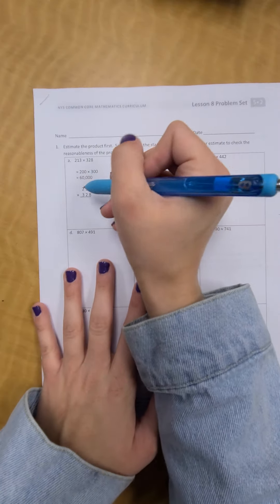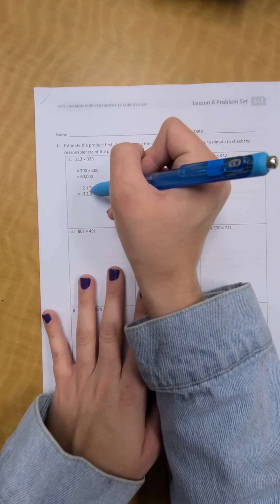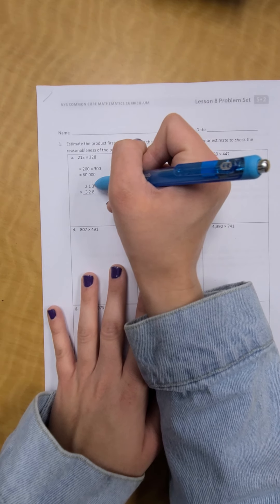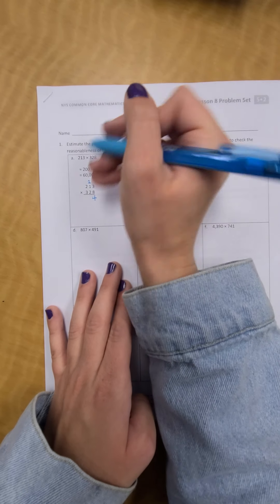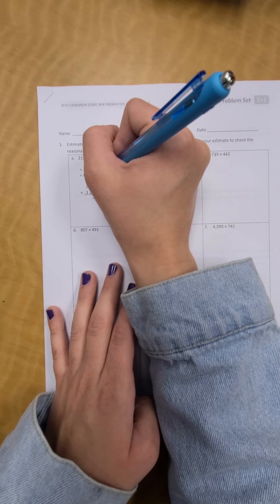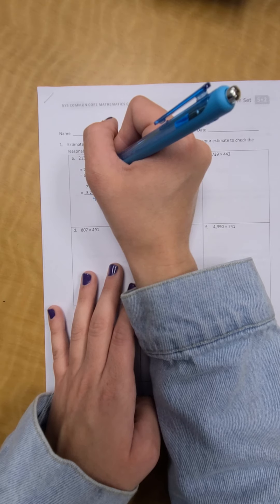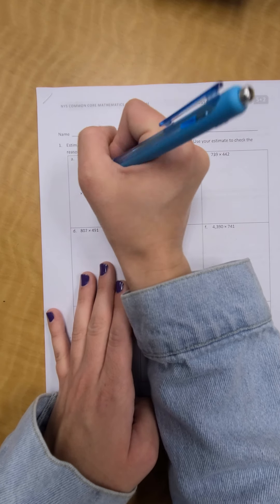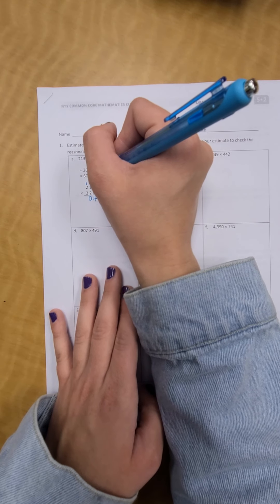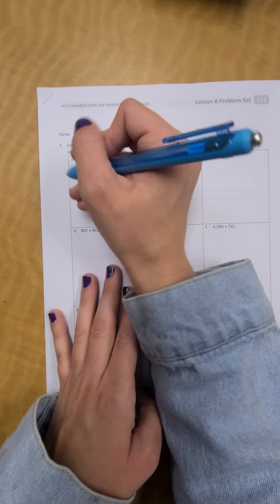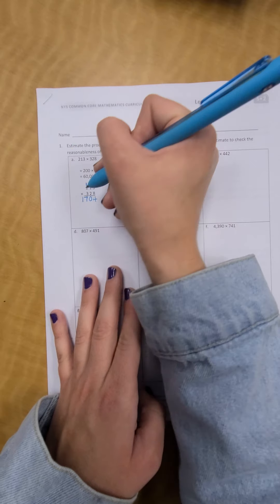So, we have 8 times 3. Remember, we're always going to start in the 1s place. So, 8 times 3 would give me 24. Put down your 4. Regroup your 2. 8 times 1 is 8, plus 2 is 10. Put down your 10. Regroup your 1. 8 times 2 is 16, plus 1 would be 17. So, put it all down.